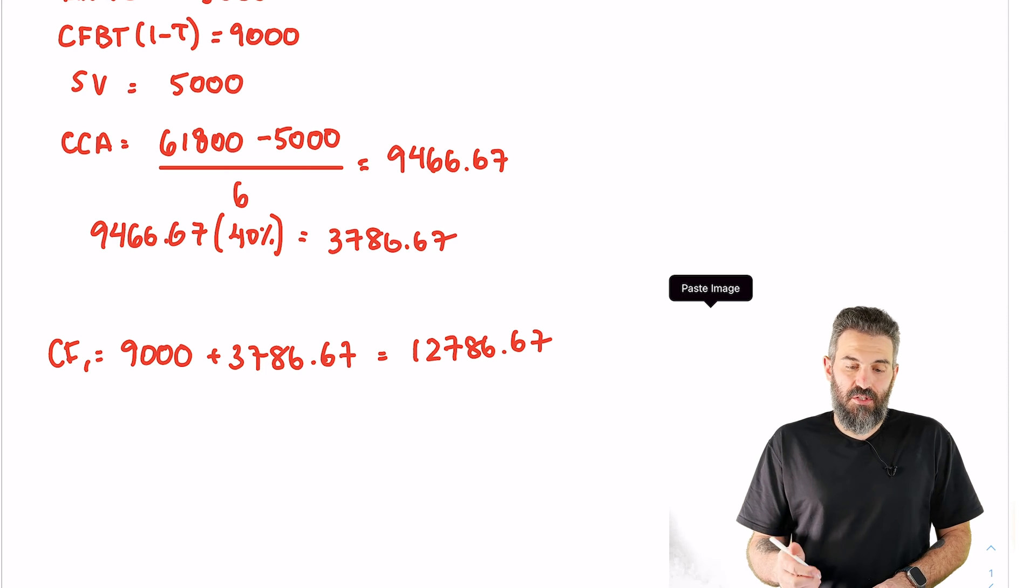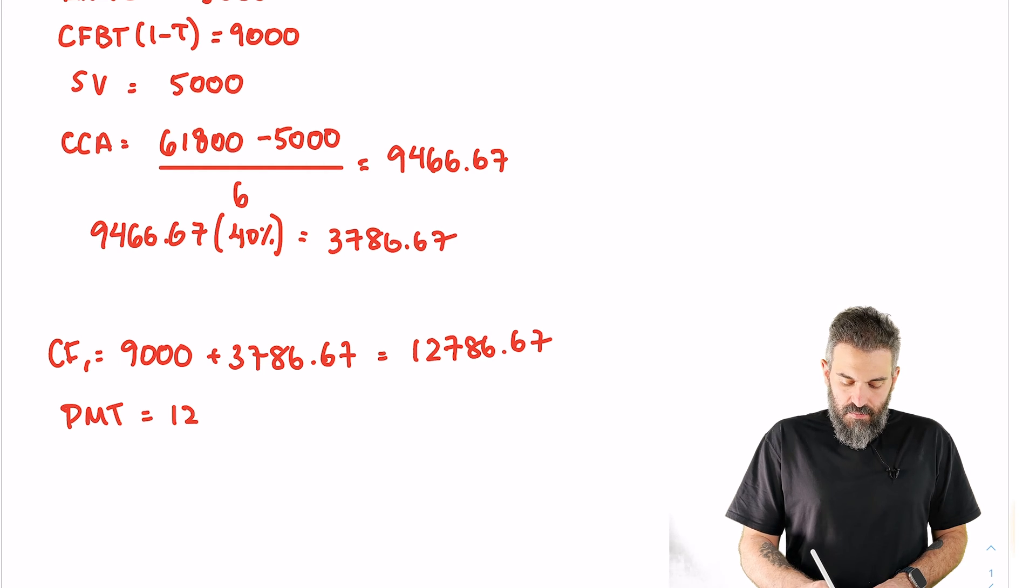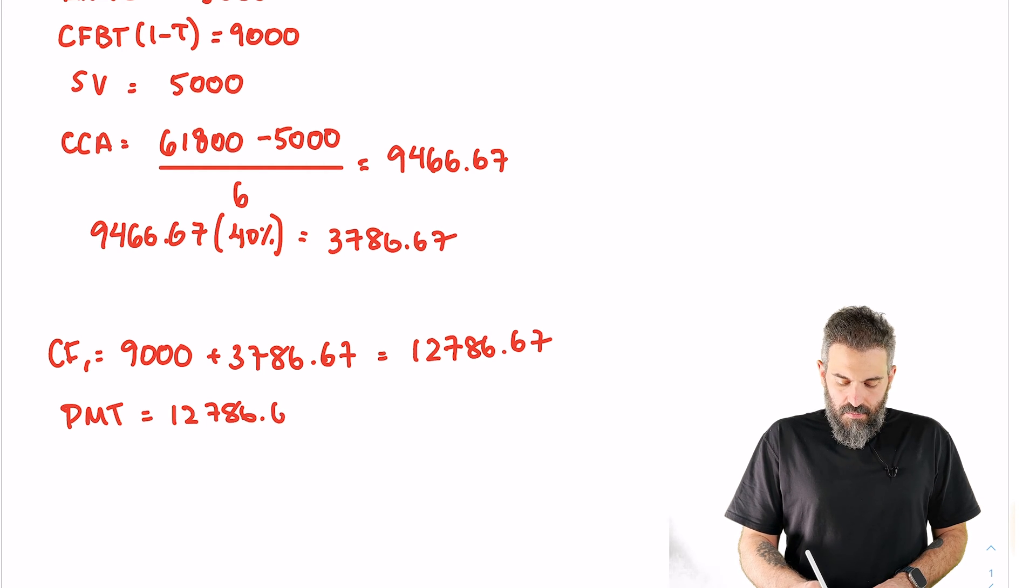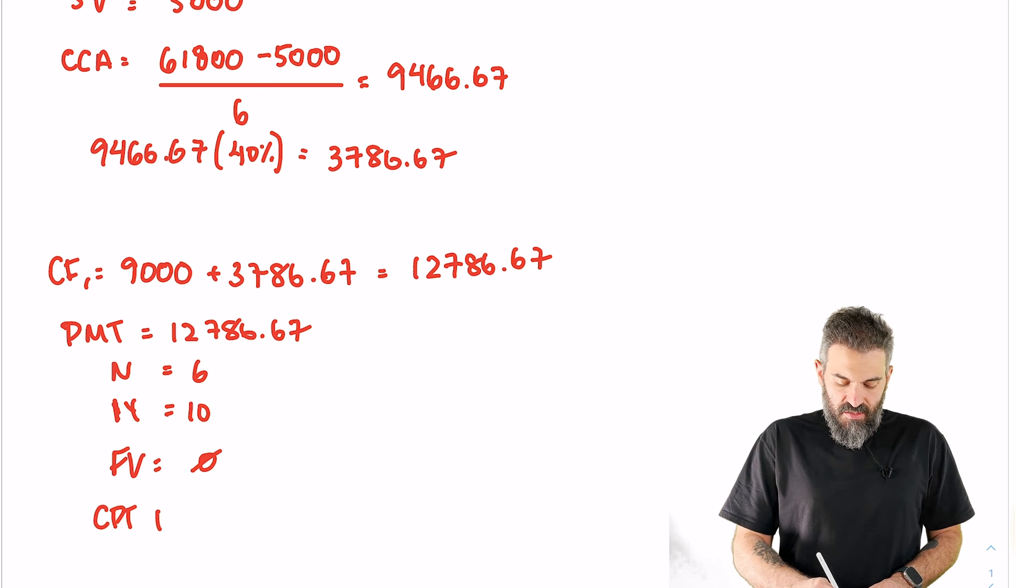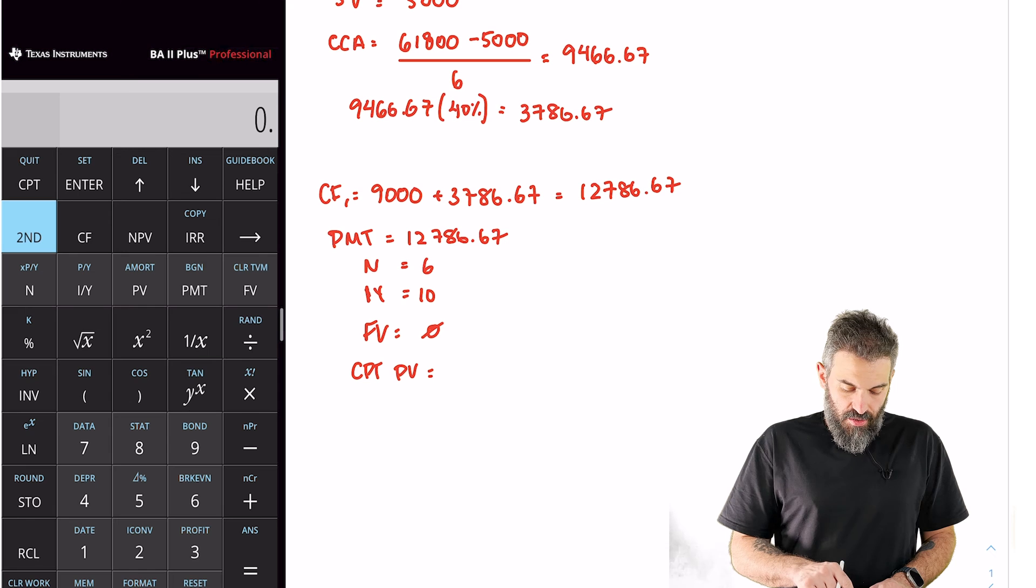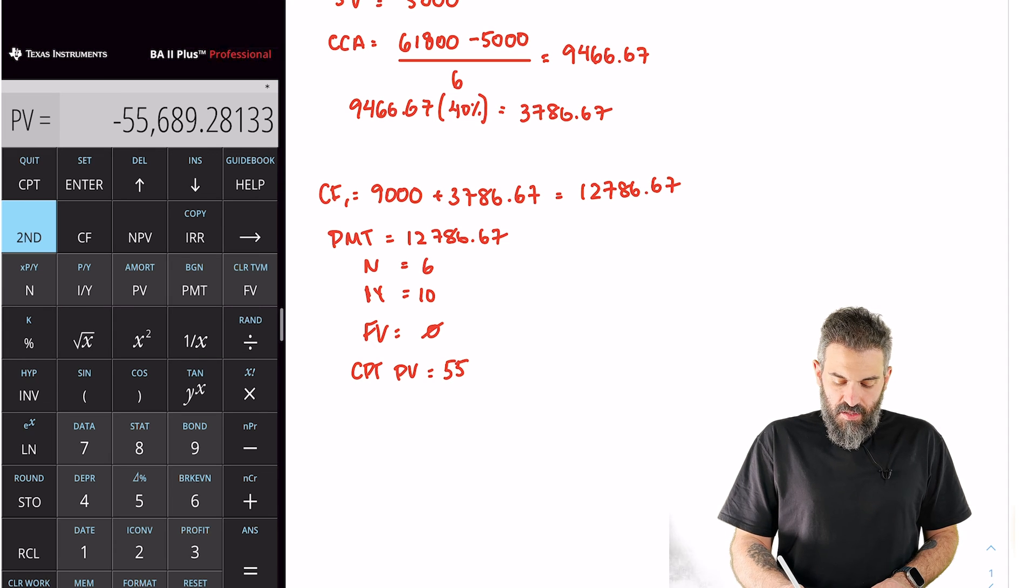So we're going to solve this as an annuity. We'll set this into our financial calculators as the payment. N equals 6, I/Y equals 10, FV equals zero. Compute PV. I had $55,689.28.